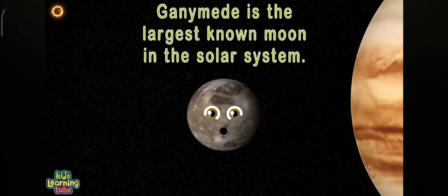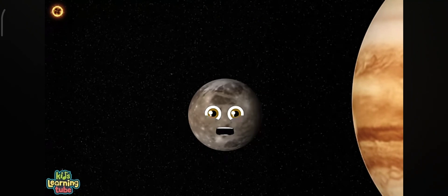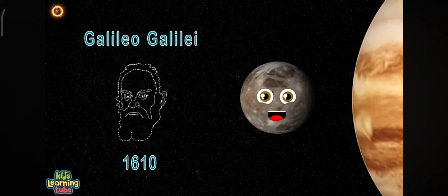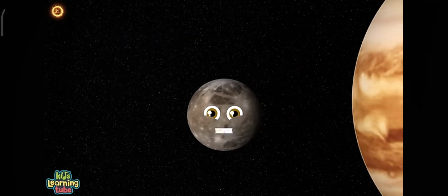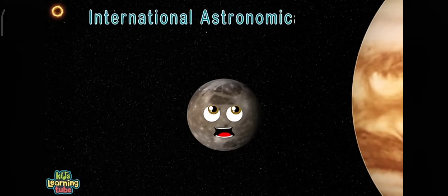Out of all the known moons in the solar system, I am the largest by far until a larger moon comes. I was discovered by Galileo Galilei in the year of 1610 in January. If I orbited the Sun instead of Jupiter, I'd be considered a planet by the IAU for sure.